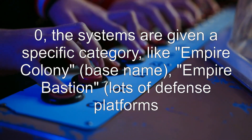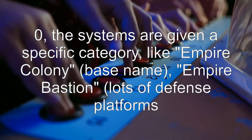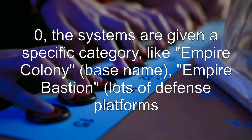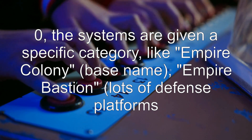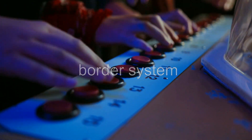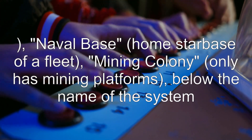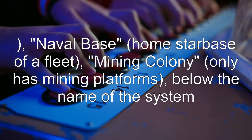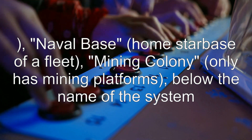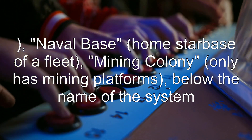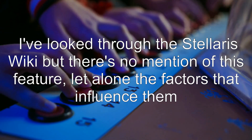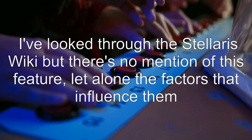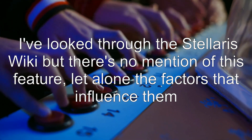The systems are given a specific category, like Empire Colony, Base Name, Empire Bastion with lots of Defense Platforms, Border System, Naval Base, Home Starbase of a Fleet, Mining Colony with only mining platforms — shown below the name of the system. I've looked through the Stellaris Wiki but there's no mention of this feature.